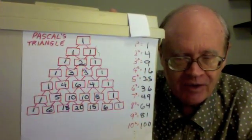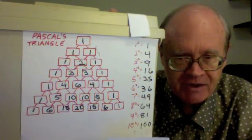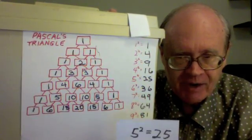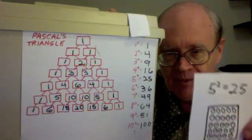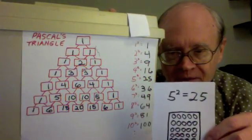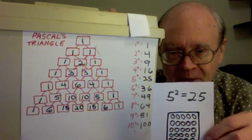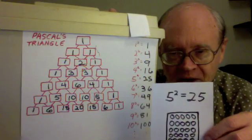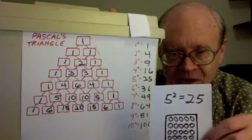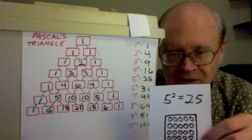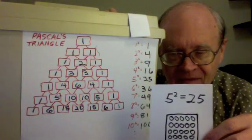Geometrically, the square numbers can be expressed, can be explained geometrically, described geometrically. For example, five squared equals twenty-five can be described geometrically as a square of twenty-five objects arranged in rows and columns, a five by five square.